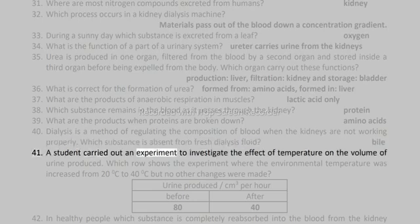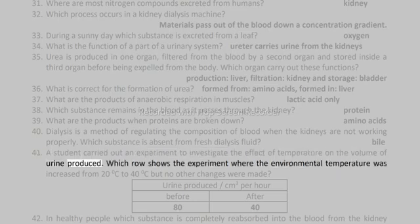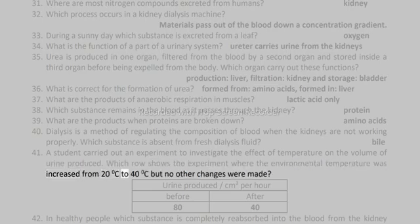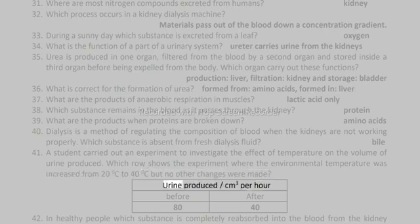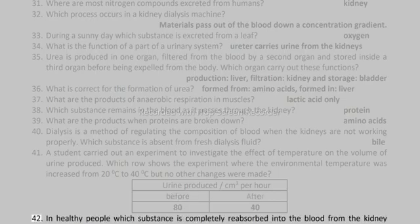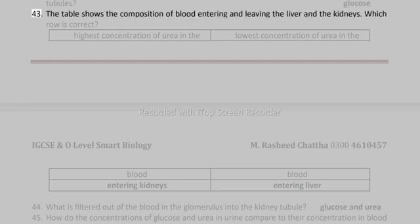41. A student carried out an experiment to investigate the effect of temperature on the volume of urine produced. Which row shows the experiment where the environmental temperature was increased from 20°C to 40°C but no other changes were made? Urine produced (cm³ per hour): before 80, after 40.